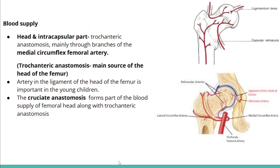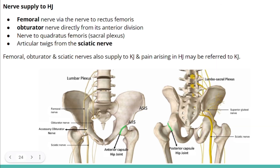The hip joint is supplied mainly by the trochanteric anastomosis, assisted by the cruciate anastomosis. The head and intracapsular part of the neck are mainly supplied by the trochanteric anastomosis, with the medial circumflex femoral artery being the most important contributor. There is also an artery in the ligament of the head of the femur — not important in adults but a significant source in children, after which it obliterates. The hip joint is innervated by the femoral nerve, obturator nerve, sciatic nerve, and the nerve to quadratus femoris. These same nerves also supply the knee joint, so hip joint pain can be referred to the knee.